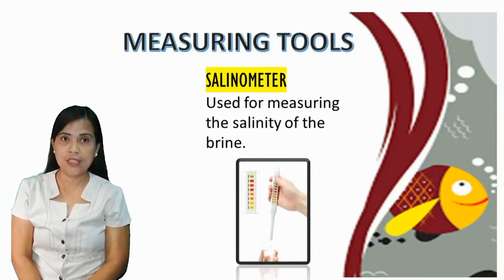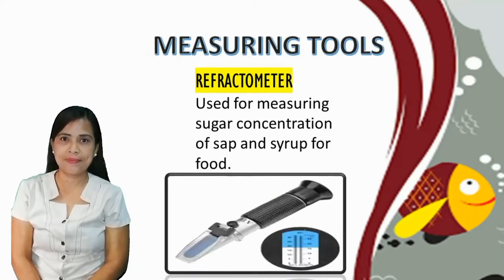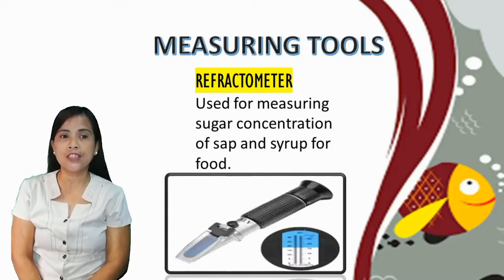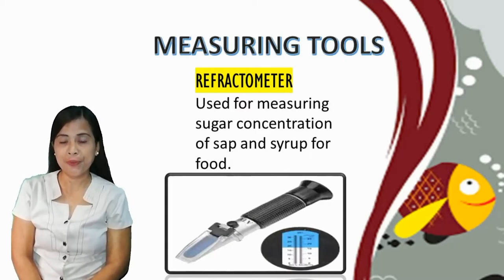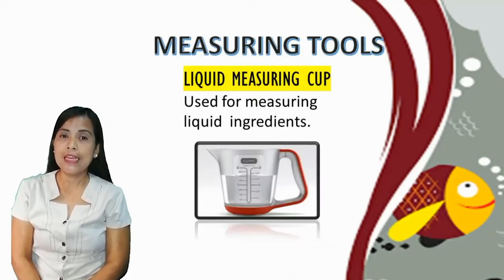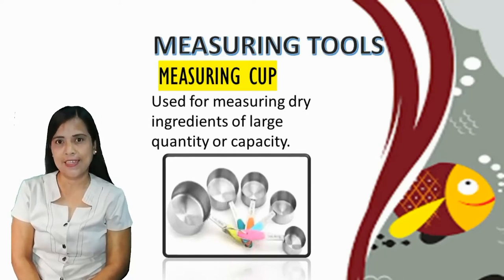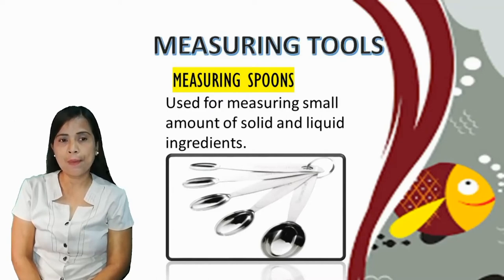First, we have measuring tools. Salinometer: used for measuring the salinity of the brine. Refractometer: used for measuring sugar concentration of sap and syrup for food. Weighing scale: used for measuring the weight of raw materials and ingredients. Liquid measuring cup: used for measuring liquid ingredients. Measuring cup: used for measuring dry ingredients of large quantity or capacity. Measuring spoons: used for measuring small amounts of solid and liquid ingredients.